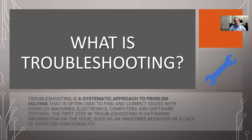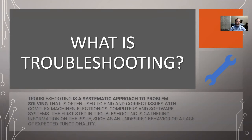The first thing we're going to discuss is what is troubleshooting. Troubleshooting is a systematic approach to problem solving that is often used to find the correct issues with complex machines, electronics, computers, and software systems. The first step in troubleshooting is gathering information on the issue, such as an undesired behavior or lack of expected functionality.